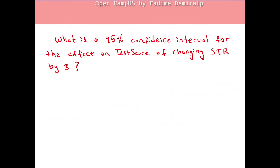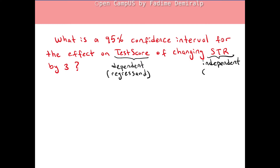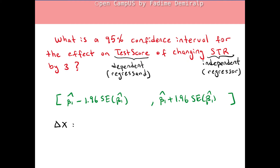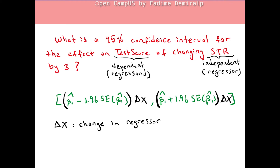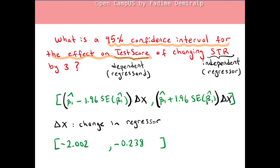I have another question. What is a 95% confidence interval for the effect on test score of changing student-teacher ratio by 3? Test score is the dependent variable, and student-teacher ratio is the independent variable in the regression. Let delta x be the change in the independent variable x. Then the confidence interval for the predicted effects of changing x can be found by multiplying both endpoints of the confidence interval for beta 1 by delta x.